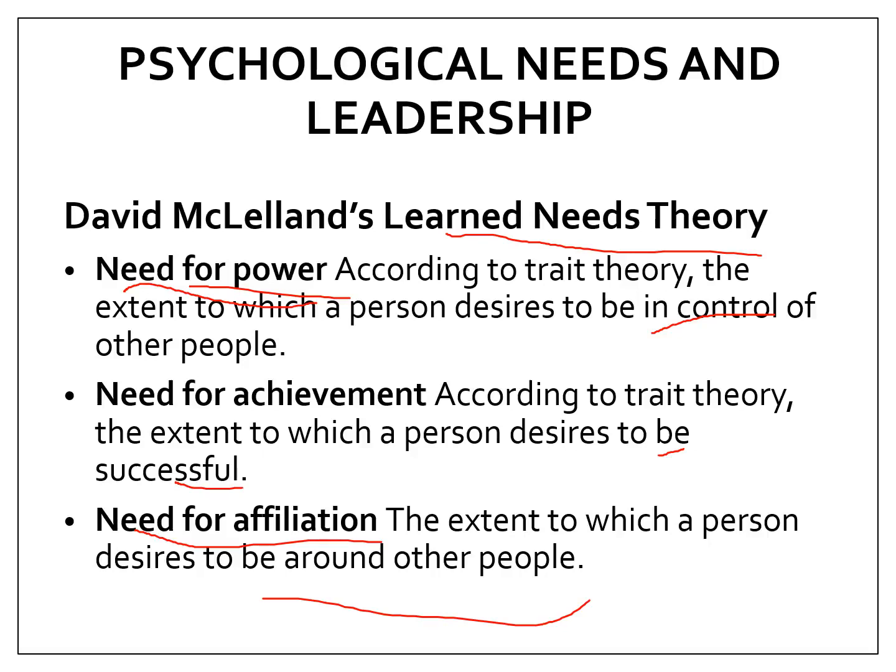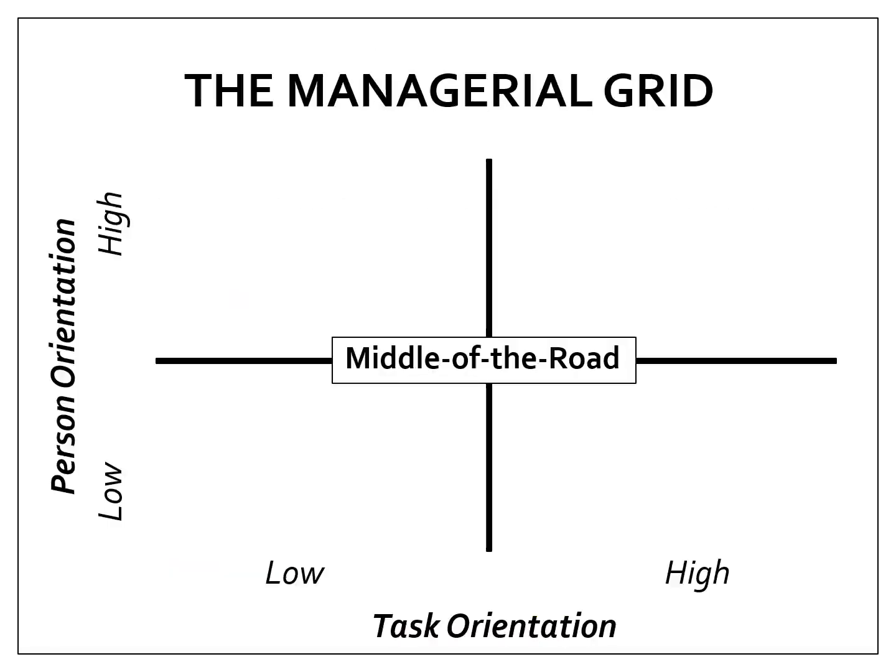Leaders differ from each other in the extent to which they possess needs for power, achievement, and affiliation. According to McClelland, we can measure these needs using psychological tests. Since his theory was based on Henry Murray's theory of needs, he suggested using the Thematic Apperception Test (TAT) to understand the extent to which we possess these needs. If you're a psychologist in a corporate setting, you could use the TAT before promoting someone to a managerial position to understand who has the need for power, affiliation, and achievement.